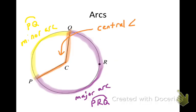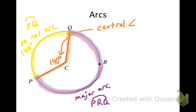Let's suppose that the measure of the central angle here, which happens to be less than 180 degrees because it is a minor arc, is 140 degrees. It turns out you can measure an arc in degrees just like you measure an angle in degrees, and you assign the exact same measure in degrees to an arc as the measure of the central angle that creates that arc. So since this is a 140-degree angle, this would be a 140-degree arc. The measure of arc PQ equals 140 degrees. Whenever you're referring to the degree measure of an arc, just write the name of the arc and put that little M in front of it.